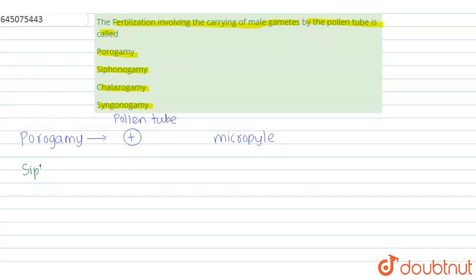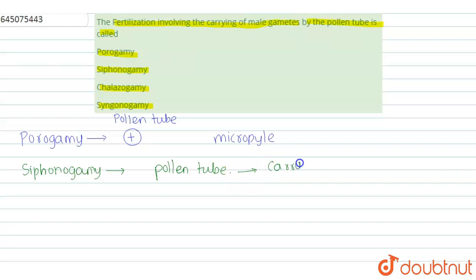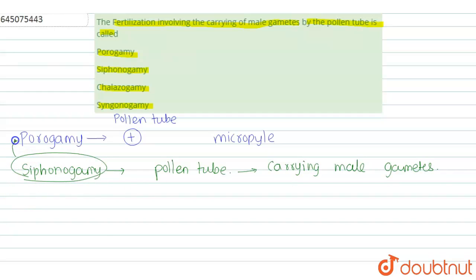Siphonogamy is a process in which there is formation of a pollen tube, and the pollen tube is responsible for carrying the male gametes. Porogamy is a type of siphonogamy — siphonogamy is a broader term, and porogamy is one of its types.